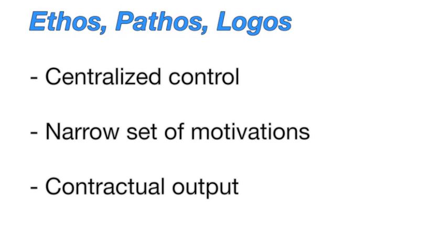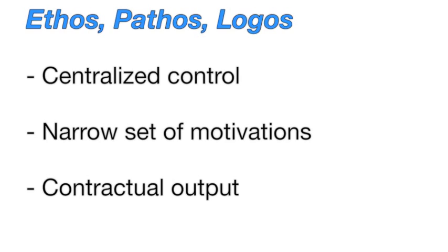Collective intelligence is a mode of peer production that combines both formal and informal structures. It involves centralized control over the goal setting and execution of tasks, a focus on a relatively narrow set of motivations and incentives, and the participants are bound by the obligation of contracts.